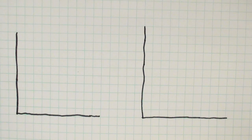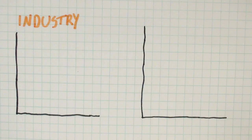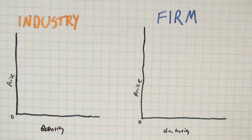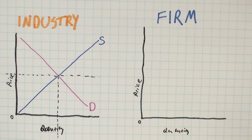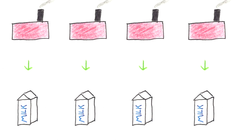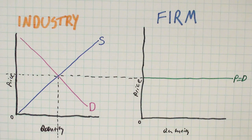Perfect competition requires two graphs. One for the industry and one for an individual firm. The industry graph is where we show the total supply and demand, and so it's where we get the market quantity and price from. Since every firm's product is the same, there's no reason any one could charge a different price. So the price we set for the market is the price, or demand, that every firm faces.